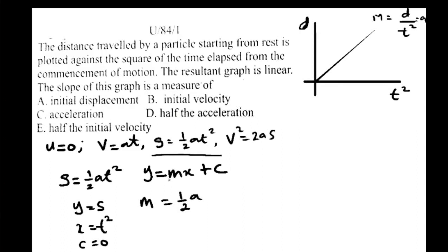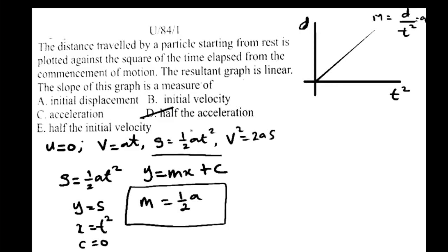The question states that the distance traveled by a particle starting from rest is plotted against the square of the time elapsed from the commencement of motion. The resultant graph is linear. The slope of this graph is a measure of half the acceleration — you can see this is the slope of the graph here. If you go by just the class explanation, you would choose acceleration, which is part of the options. The intelligent student picks acceleration; the smart one picks half the acceleration.